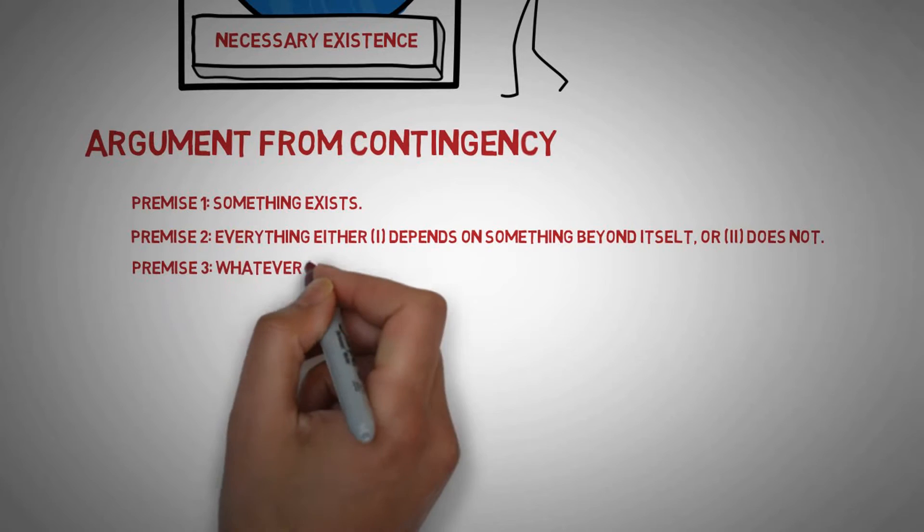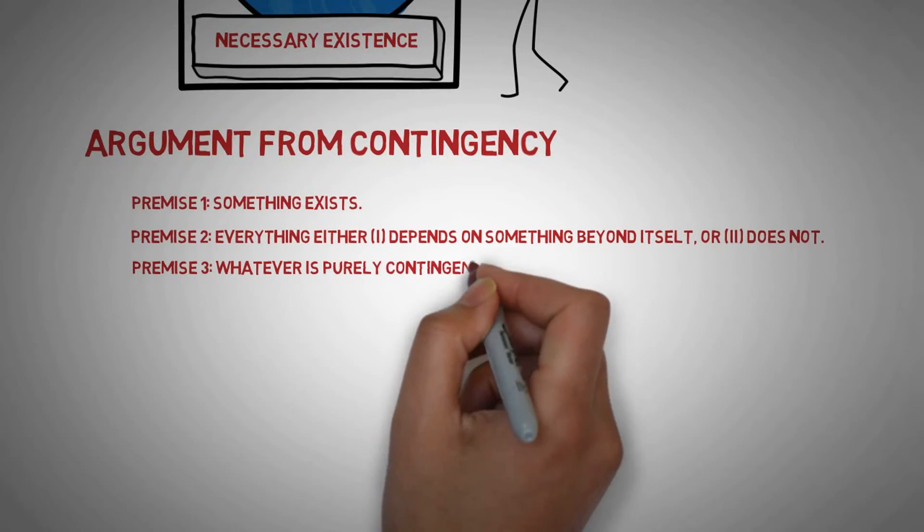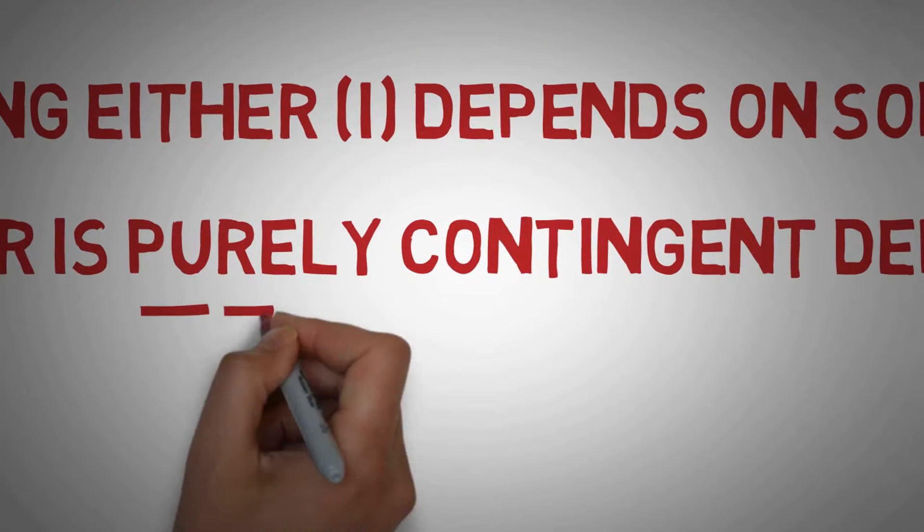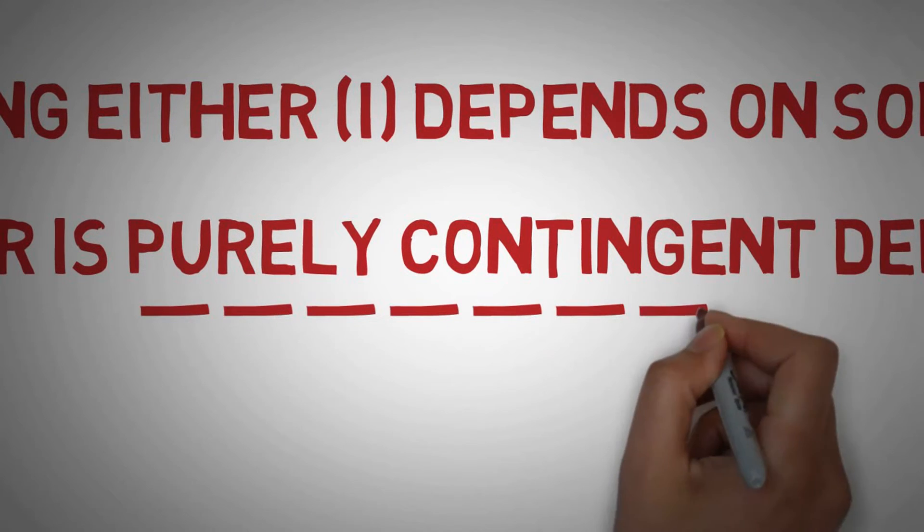Premise 3. Every purely contingent reality depends on something beyond itself. A purely contingent reality is anything that lacks self-existence within it.